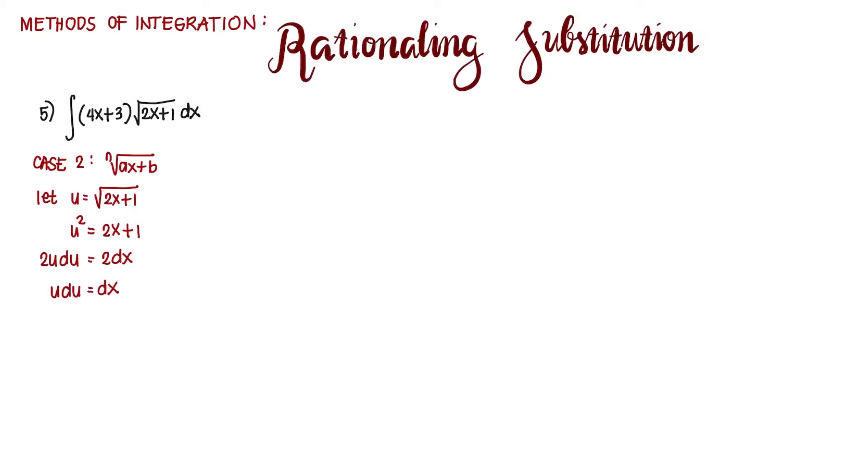Because of this substitution, we introduce the new variable u, so we replace all x's in the given integrand with u. We now have something to replace dx, and for square root of 2x + 1, we have u.